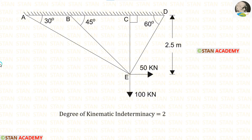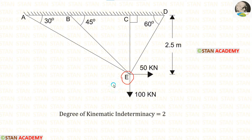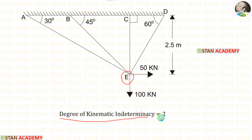Now let us find the degree of kinematic indeterminacy. In this truss the points A, B, C and D are fixed, so there will be no displacement at these points. But at joint E there is no support, so it can have vertical and horizontal deflections. Since it needs two restraints — one horizontal and one vertical — the degree of kinematic indeterminacy is equal to 2.